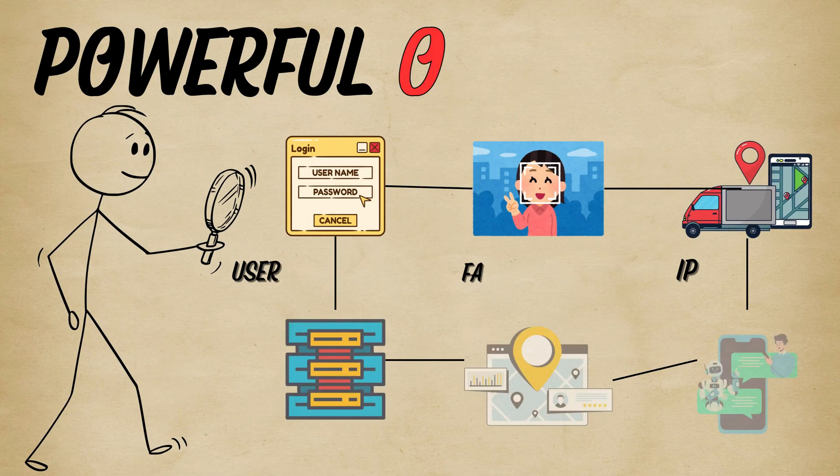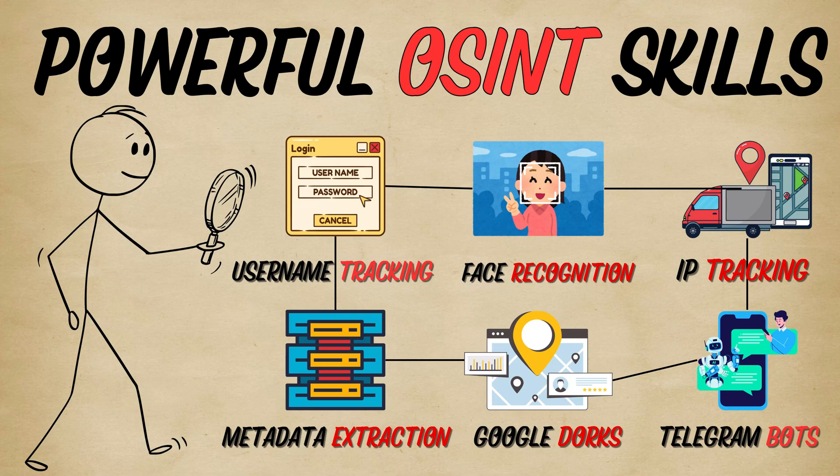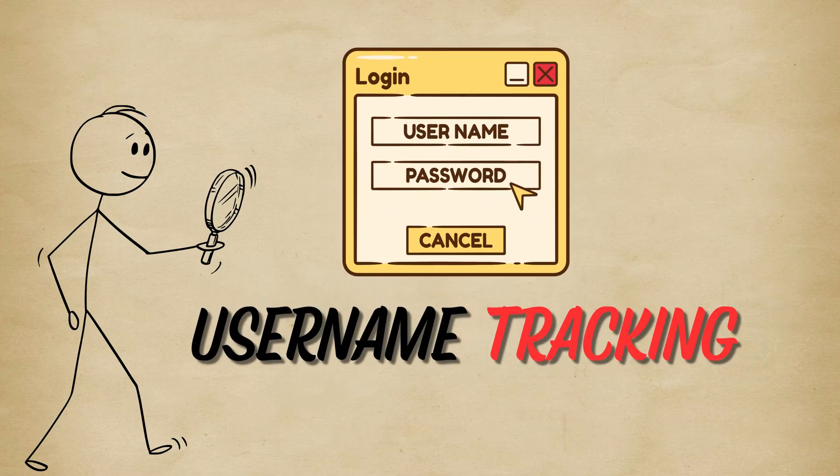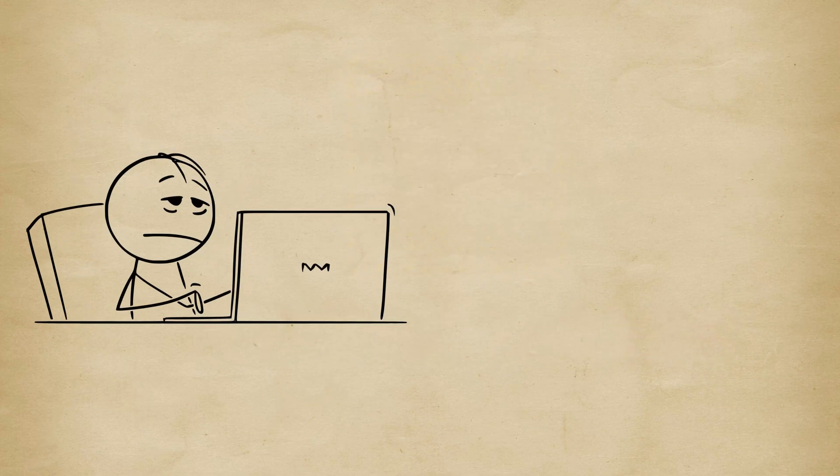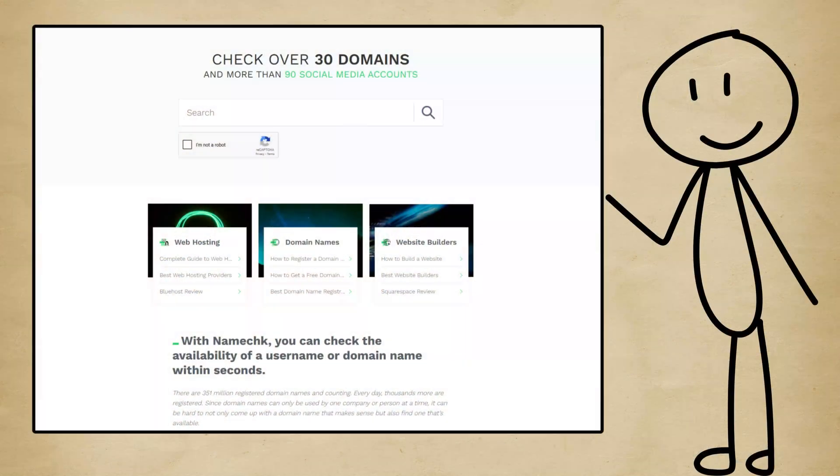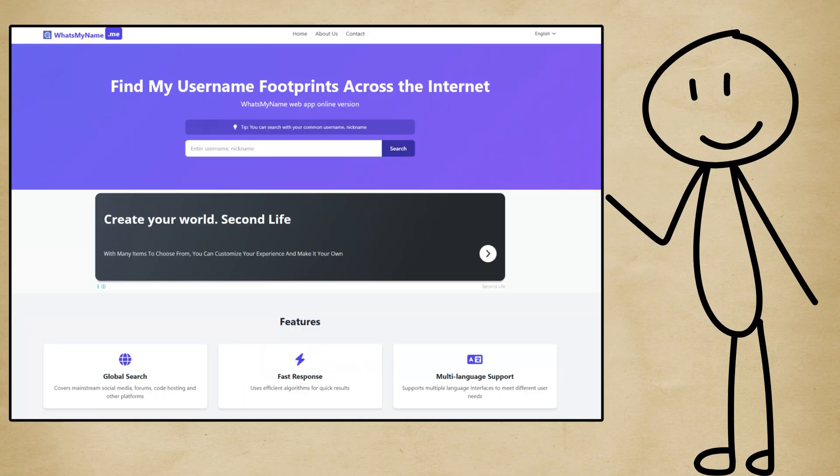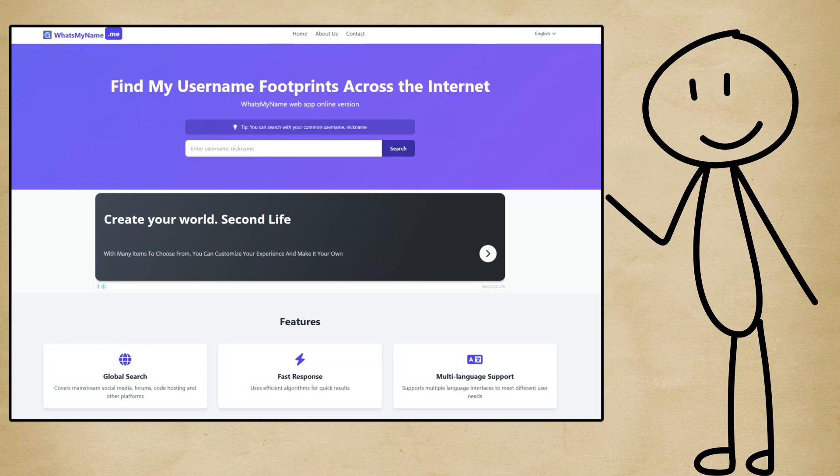Let's start with one of the most underrated yet powerful OSINT skills: username search. Here's the thing. People reuse the same username everywhere. Instagram, Twitter, gaming sites, even old forums. With tools like Namek or What's My Name, you can plug in a username and instantly see everywhere that name exists online.